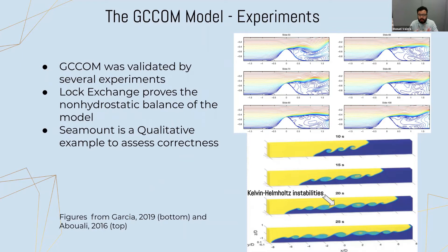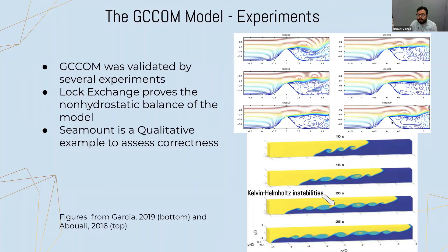We need experiments to validate our work. Today we'll show two experiments. The first is a seamount — a qualitative example used to show that results look correct. These are results from Mohammed Abul Ali in 2016, showing different slices of a seamount being forced from the left with a linearly increasing velocity from zero to 0.1 on top, blowing over the seamount. We need to see an undulating pattern and clearly lower drag force on the back side of the seamount.